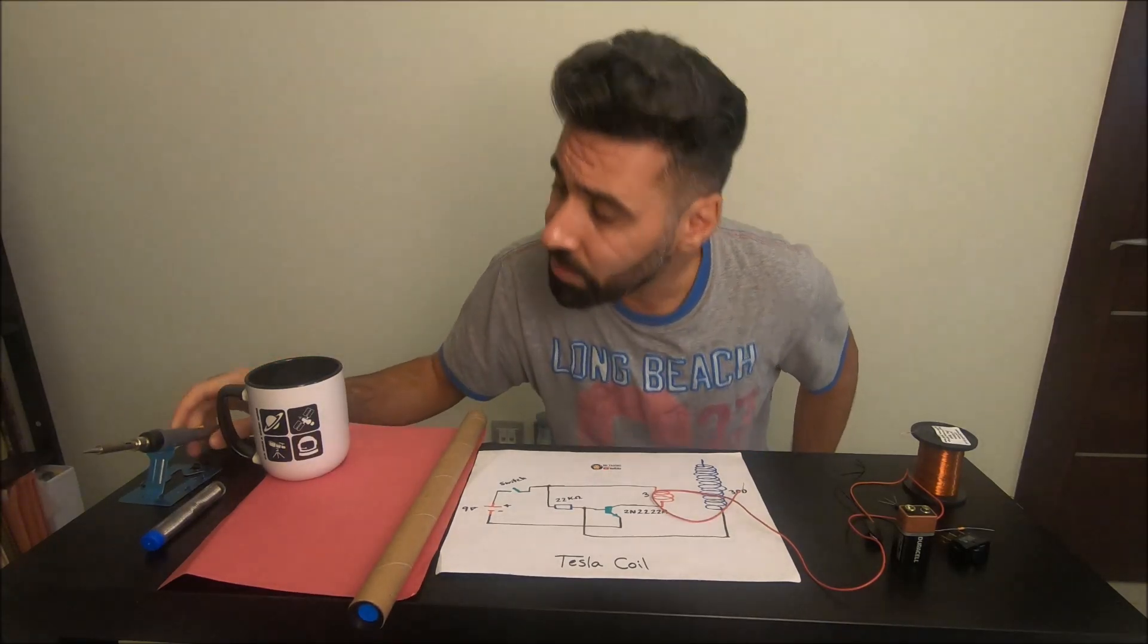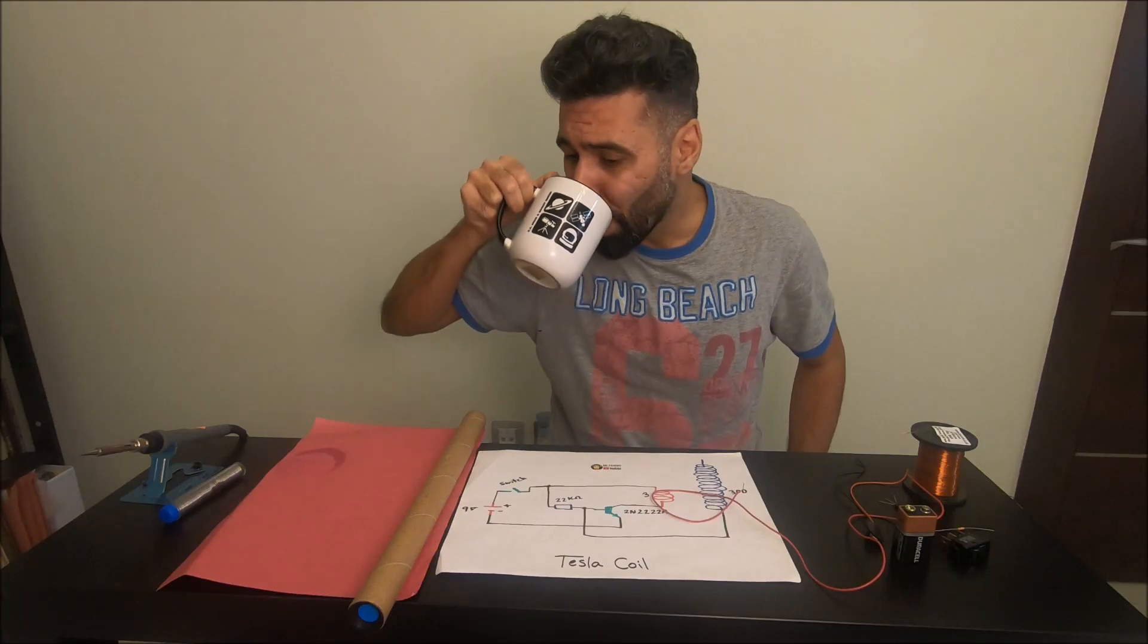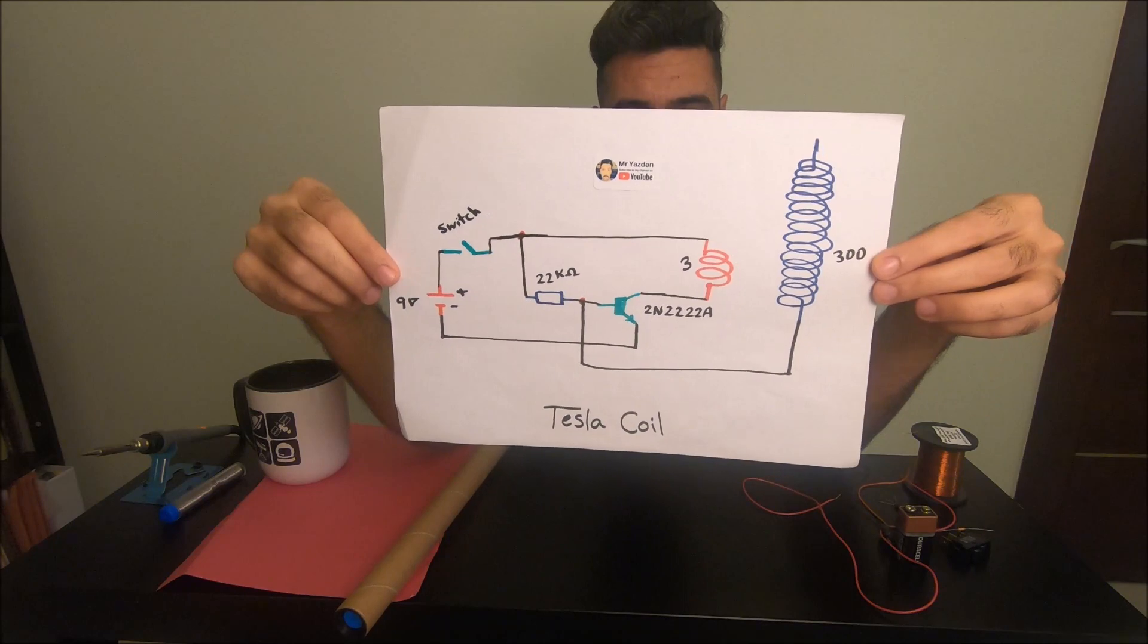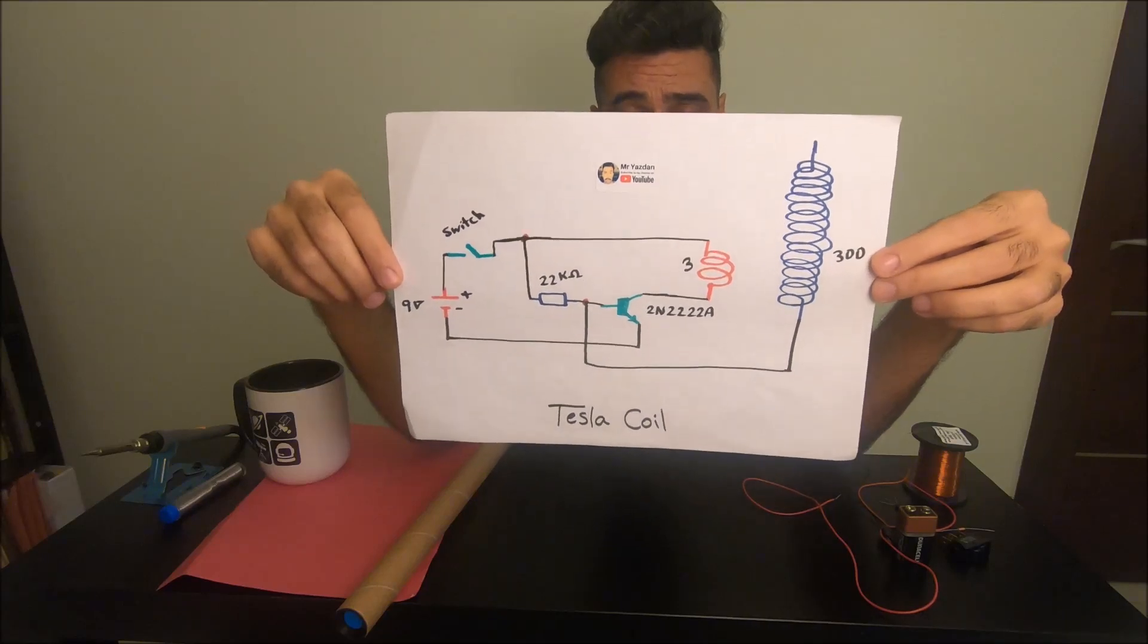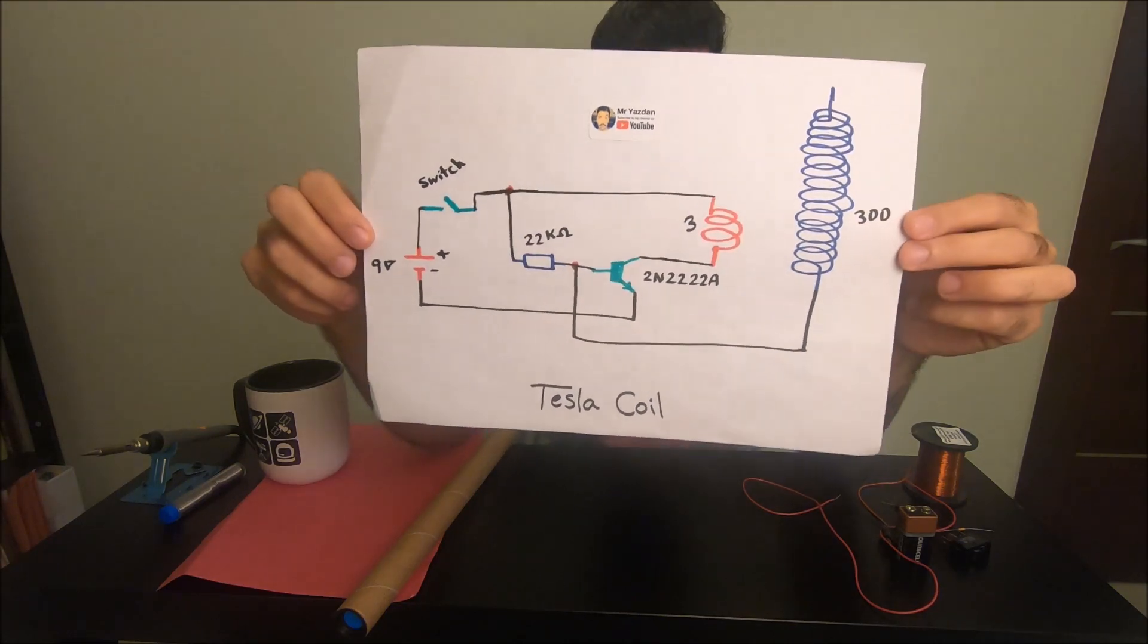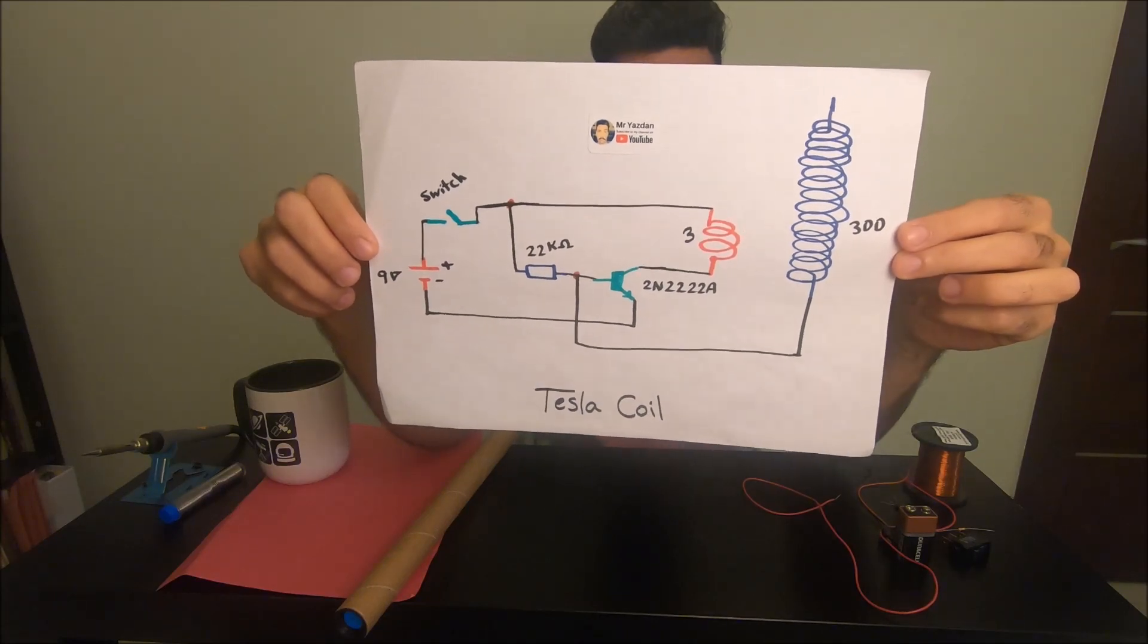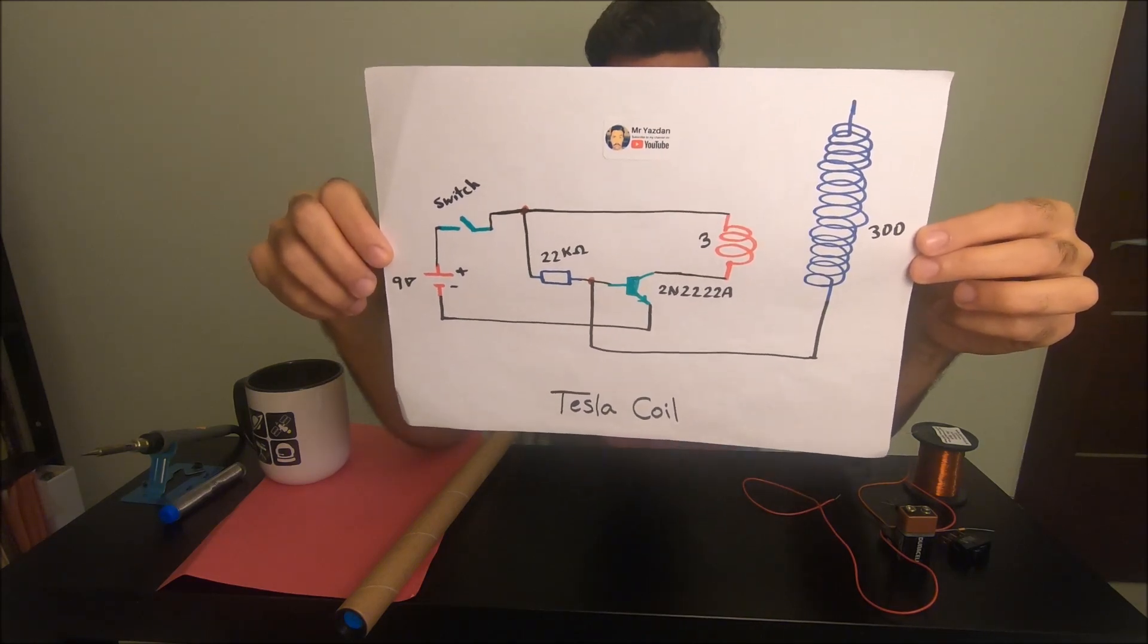Soldering iron and obviously solder wire. A cup of tea to keep you going. Still hot. And the last but not the least, the most important one is the circuit. So that's the circuit that you need to have when you're making this. Either take a screenshot or go to my Instagram page, Mr. Yazdan, to find this there. I will upload it there. So all these red dots that you can see, that is the connection. If there's no red dot at the junction, means they just go over each other without any connection. Primary: 3 turns, around 300 turns for secondary coil. And that's all you need.